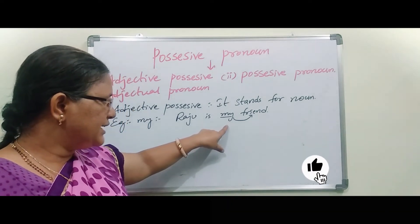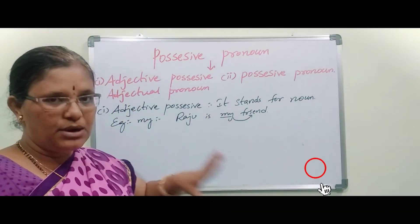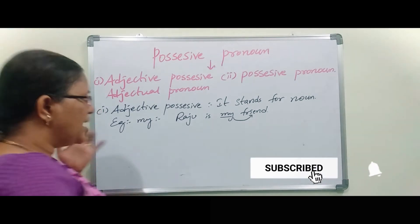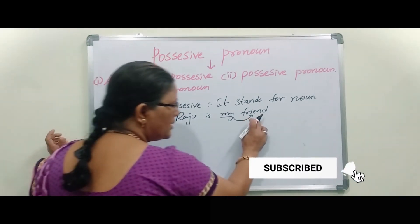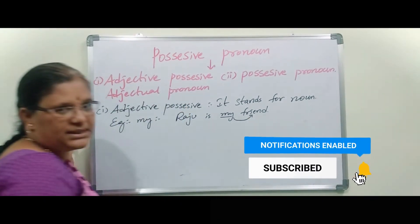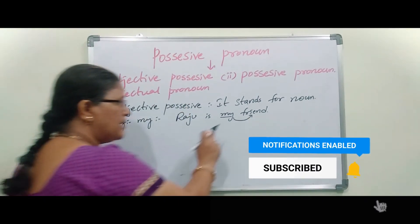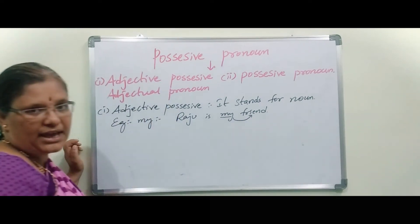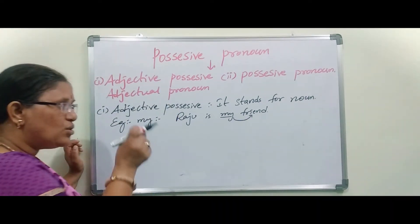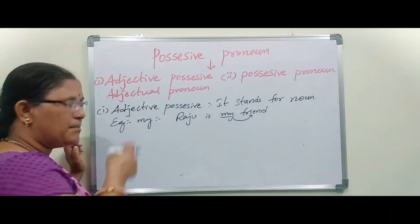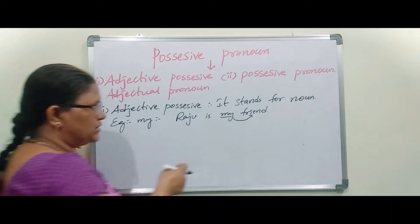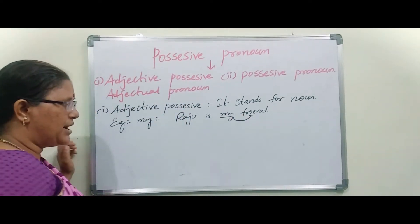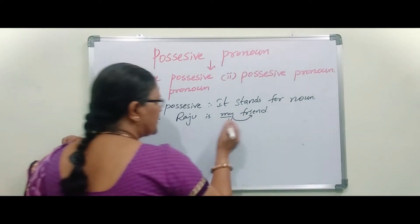Always, adjective talks about a noun. Here, 'friend' is a common noun. So 'my' is talking about 'friend' — whose friend? My friend. That's why 'my' comes under Adjectual Pronoun.